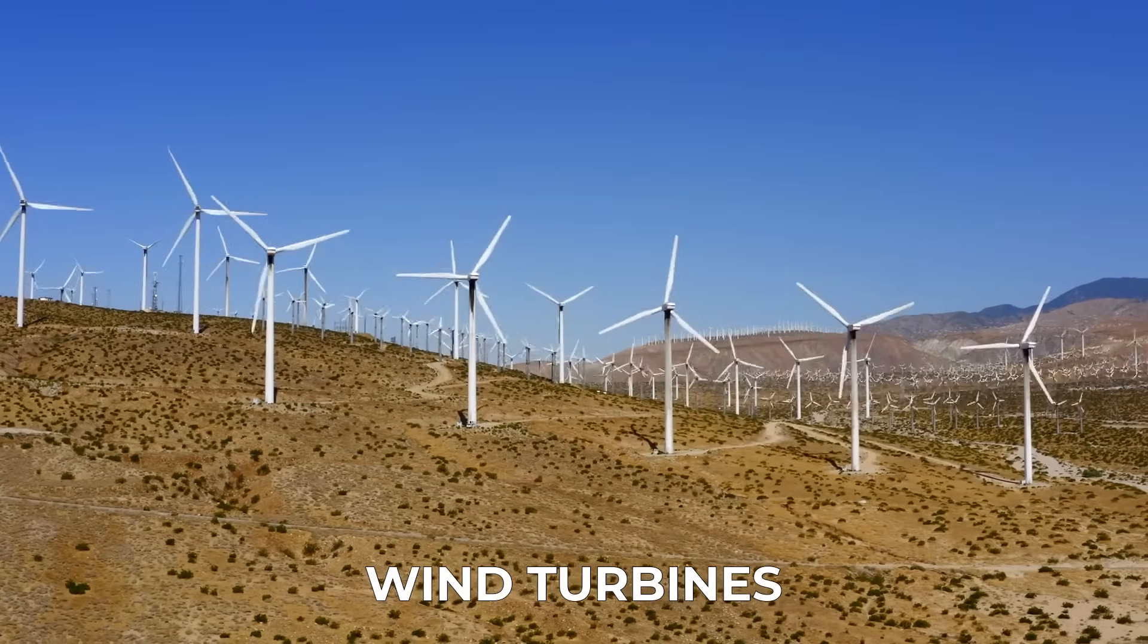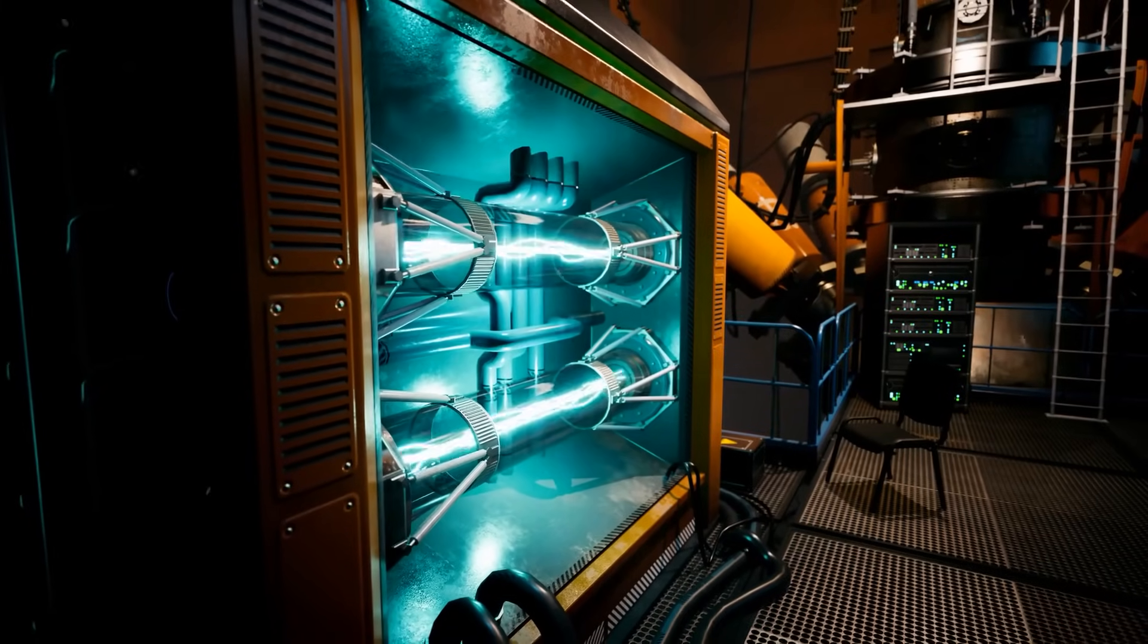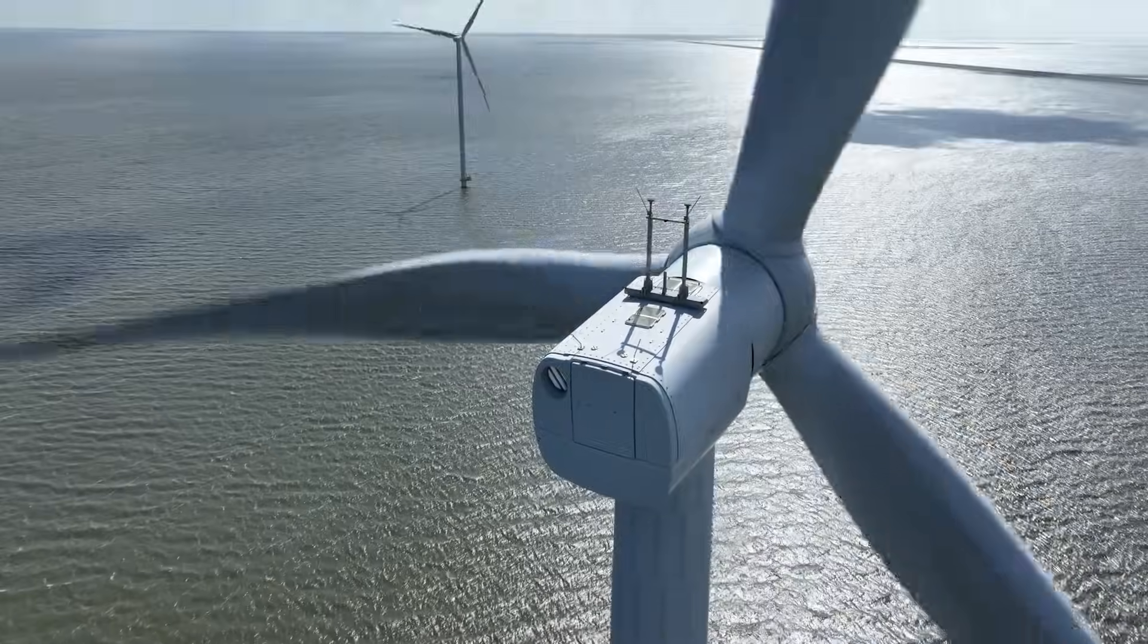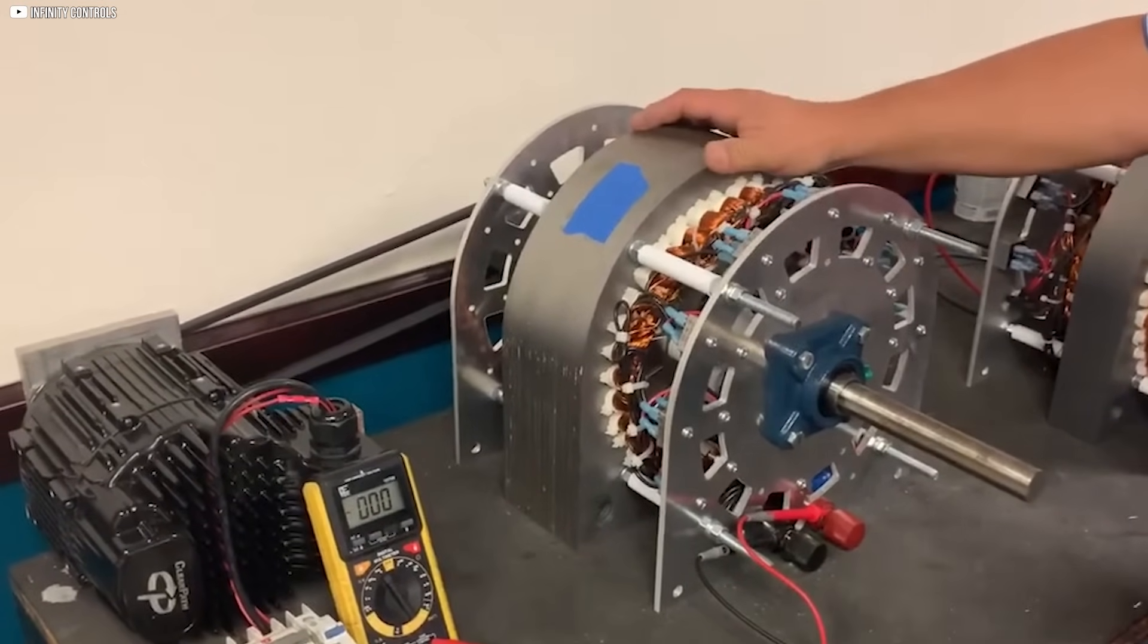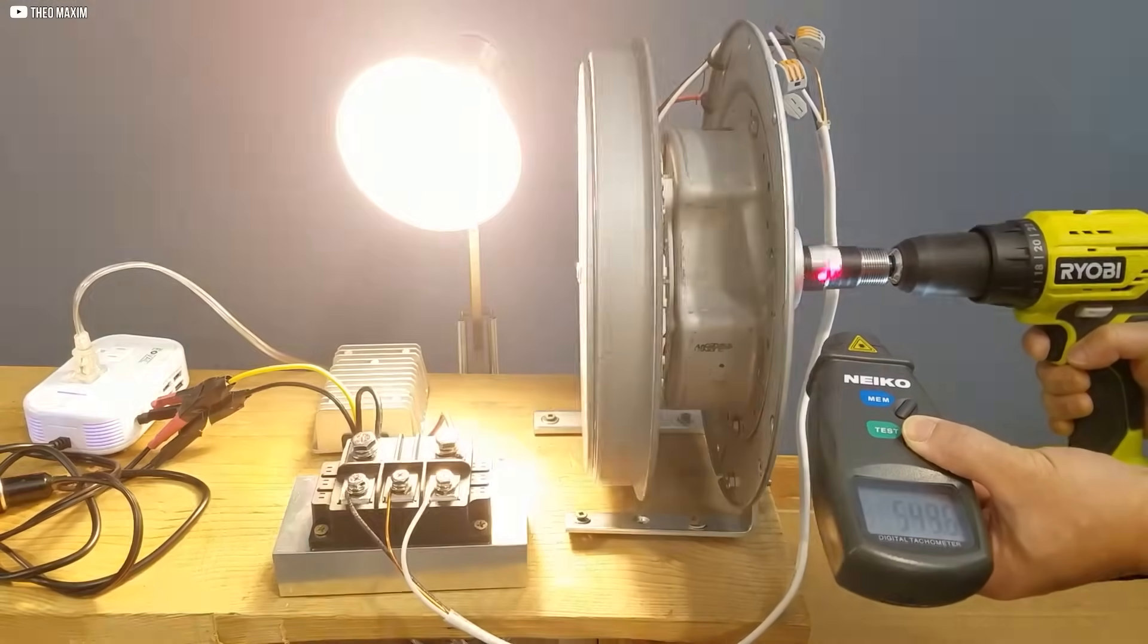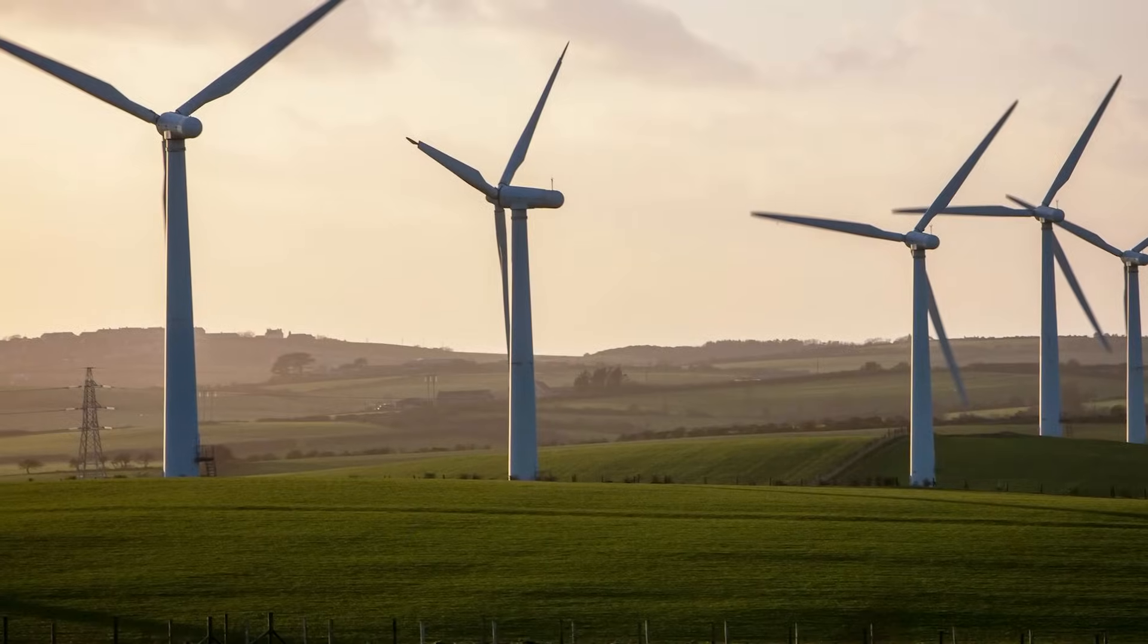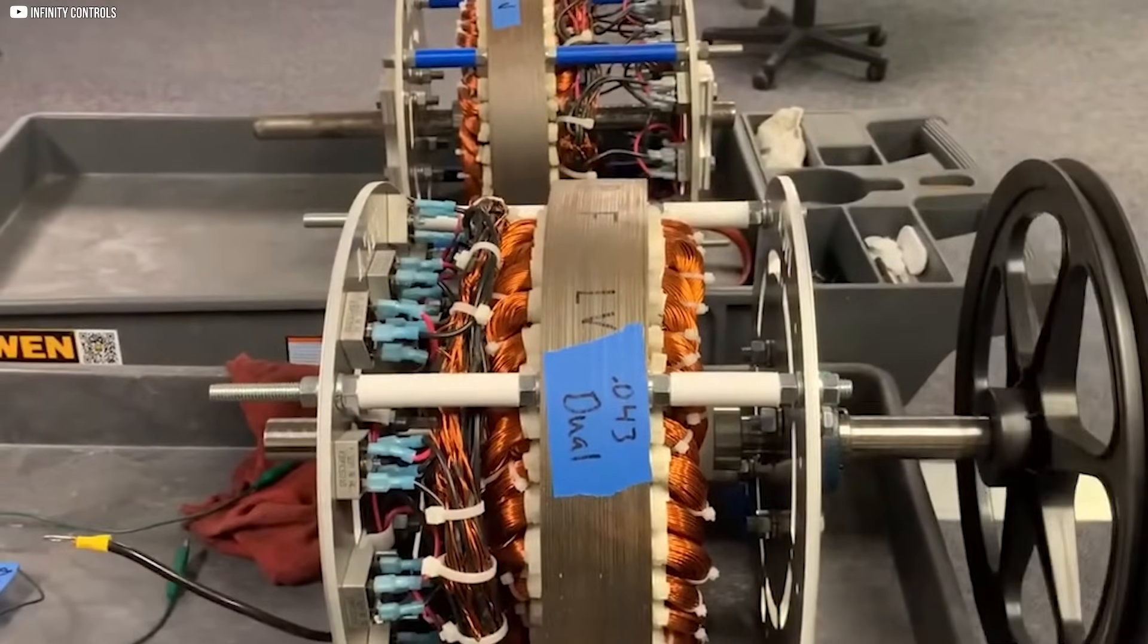Wind turbines often struggle with fluctuating wind speeds. Conventional generators require high RPMs to start generating usable power, which limits their efficiency when the wind is low. The iGenerator changes that dynamic entirely. Its ability to generate high voltage at lower RPMs makes it an ideal match for wind farms, especially in locations with light or unpredictable wind patterns.